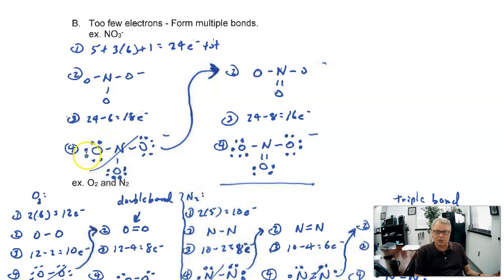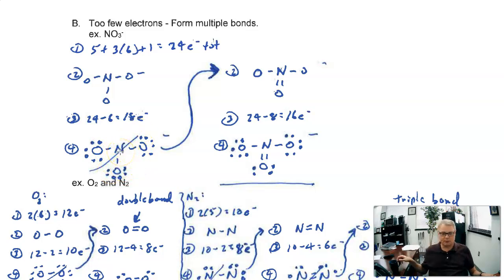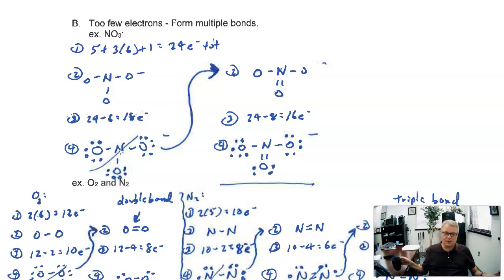We distribute the 18 remaining electrons around the atoms. Each oxygen ends up with 8 electrons — stable. But the problem is there are only 6 electrons around this nitrogen. That's 3 out of 4 pairs — and that's not close enough. Nitrogen needs 8 electrons to be stable.